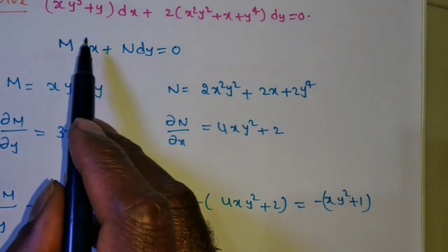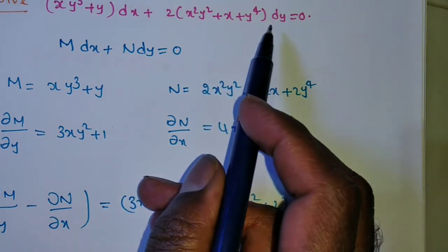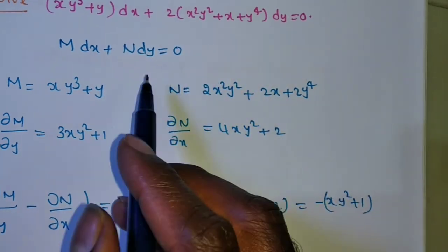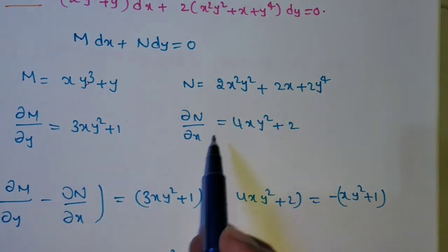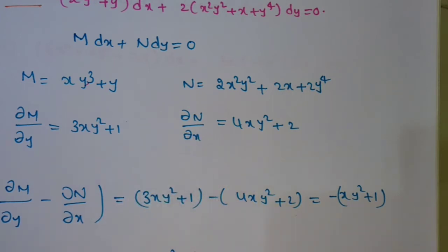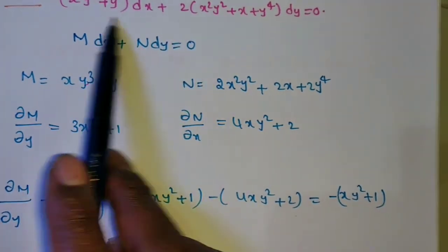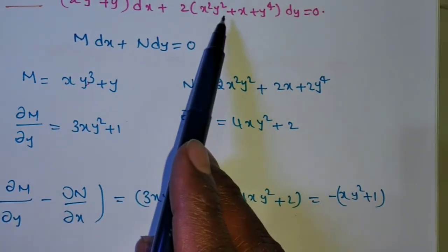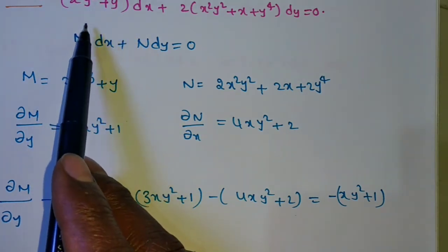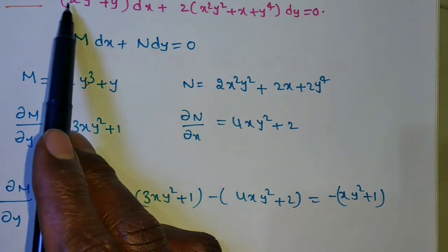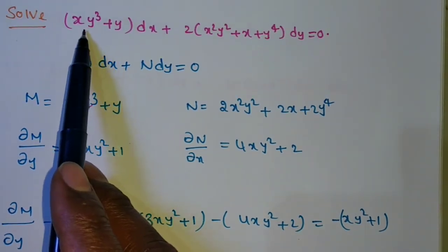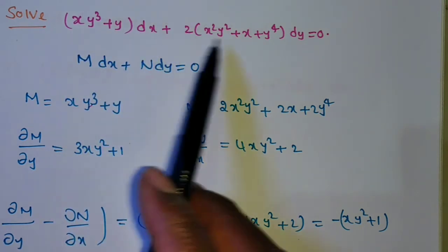Next problem: solve (xy³ + y)dx + 2(x²y² + x + y⁴)dy = 0. Write M and N, find ∂M/∂y and ∂N/∂x — they are not equal, so non-exact. Check Rule 1 (inspection) — y dx terms cannot be separated, not possible. Check Rule 2 (homogeneous) — degree 4 vs degree 1, non-homogeneous. Rule 3: y is common but xy² vs x²y² doesn't fit, so Rule 3 is not possible.